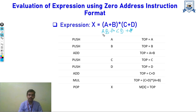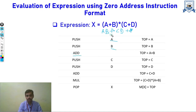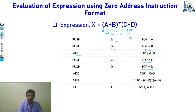We push each operand onto the stack. When we encounter an operation symbol, we perform the operation and push the result back on top of the stack. So: push A, push B, then we get addition — we pop A and B, add them, and push A plus B to the top of stack. Then push C, push D, then we get plus — we pop C and D, perform addition, and push C plus D onto the top of stack.